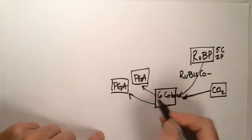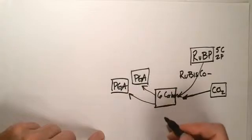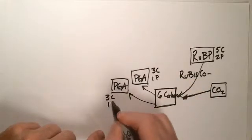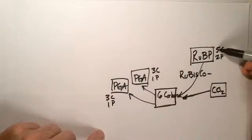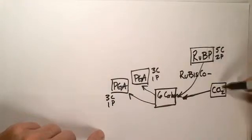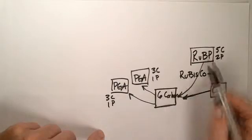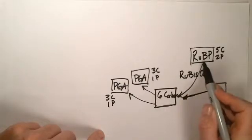Now, PGA, each one of these is only going to have three carbons and one phosphate. And here's the deal. Five carbons, ribulose bisphosphate, carbon dioxide, one carbon, makes this six-carbon molecule.